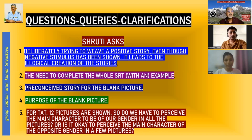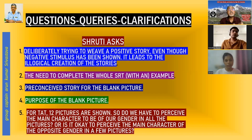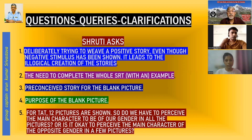Your first question on TAT: deliberately trying to weave a positive story, even when a negative stimulus has been shown, leads to illogical creation of stories. The psychologist projects three types of pictures: the neutral picture, a picture suggesting stress, and a direct stress picture. When you say negative, I think you're talking about pictures in which there is direct stress — the cause and the effect of that stress.